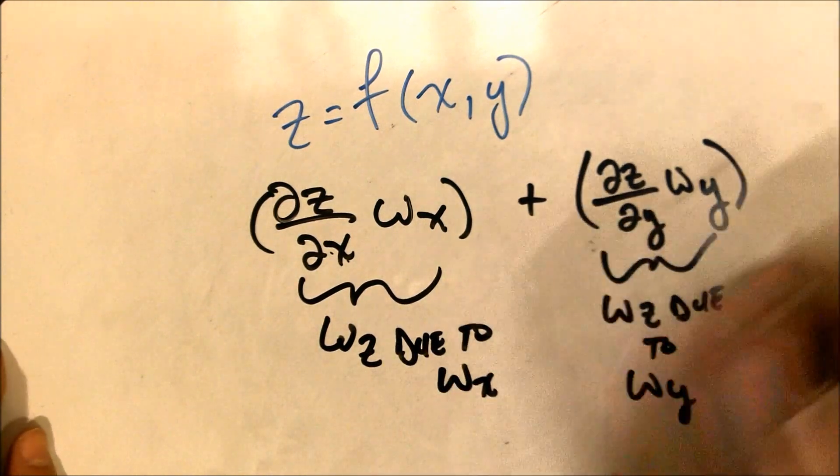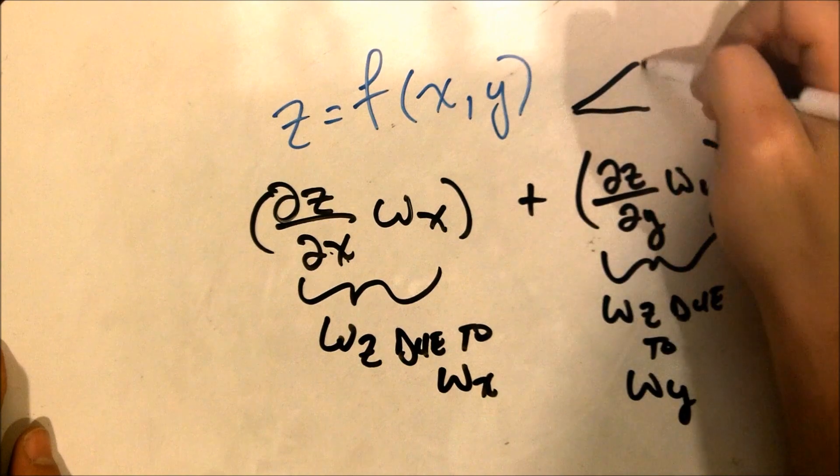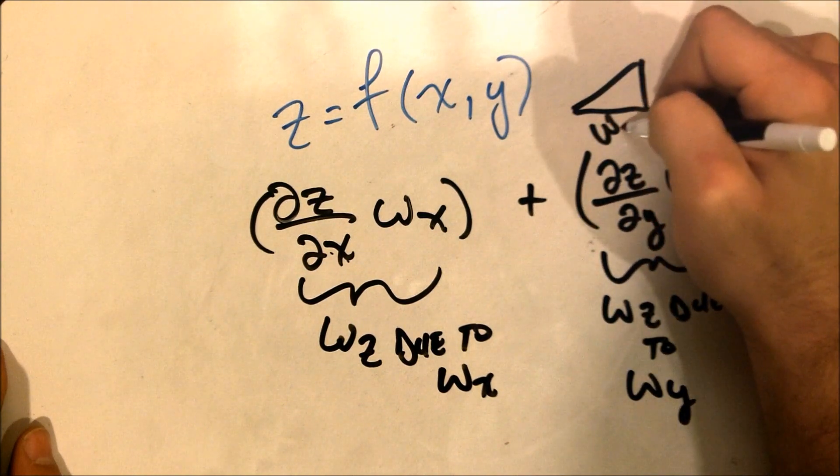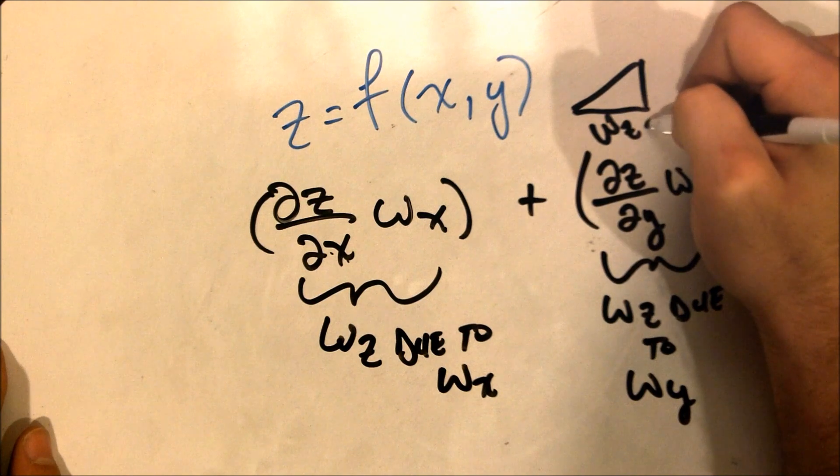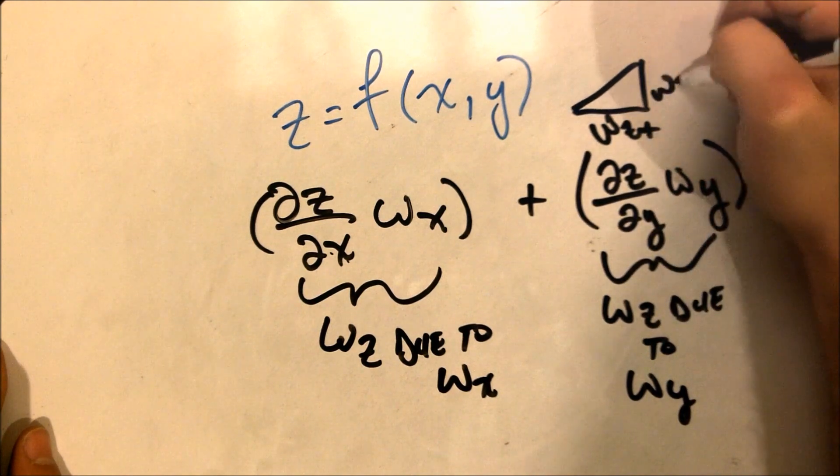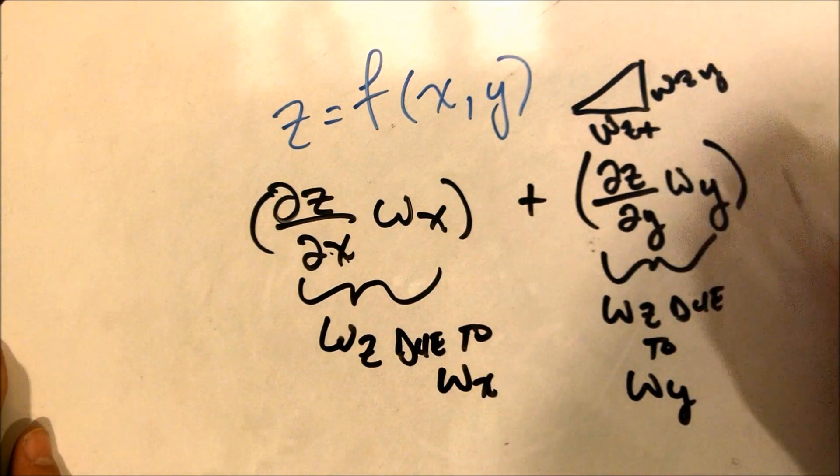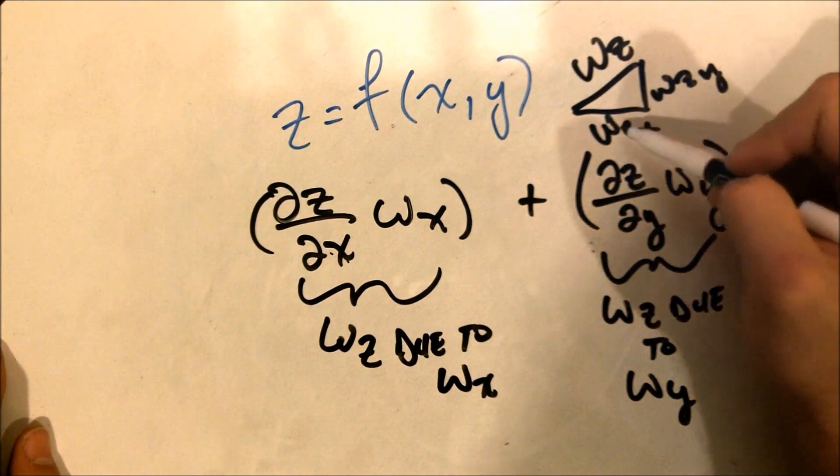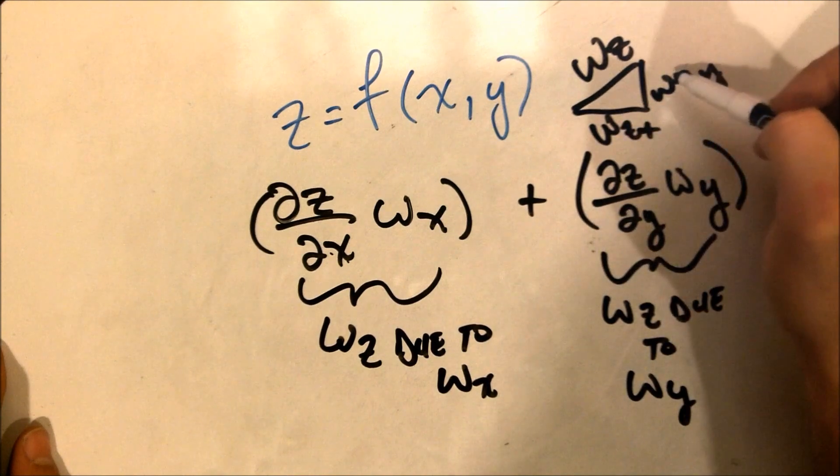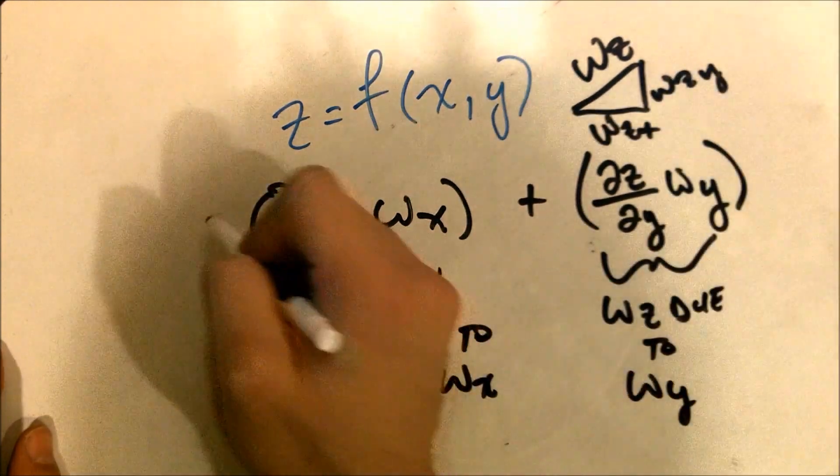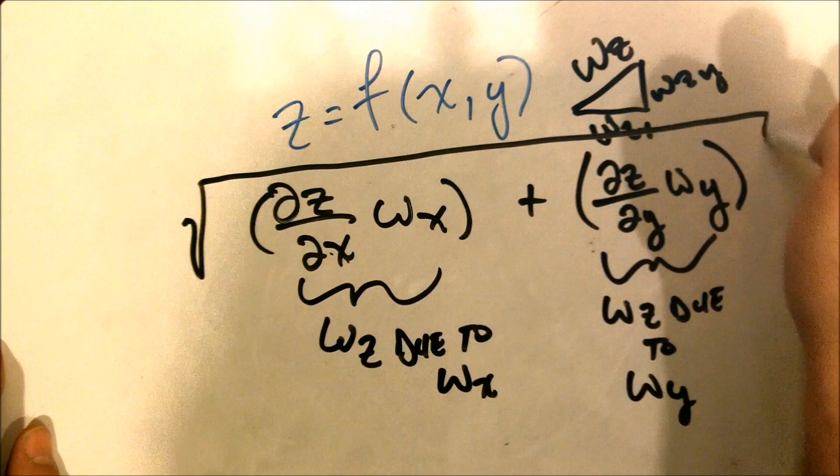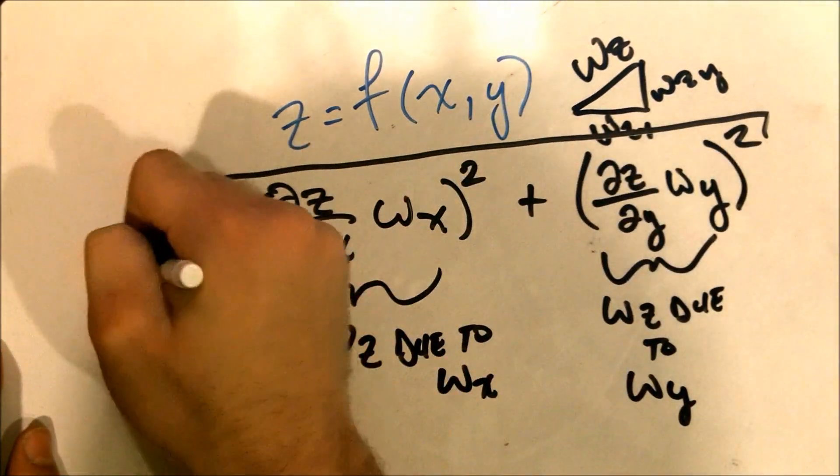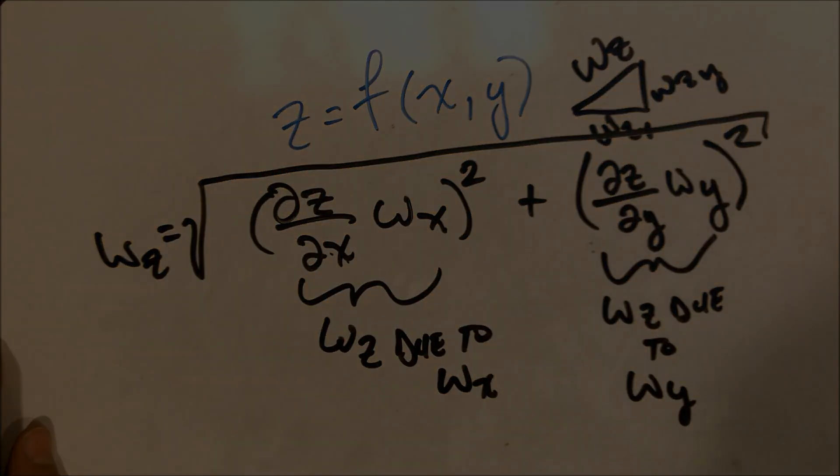Well, we add them like we add the sides of a triangle. And so we would say, if this is omega-Z due to X and this is omega-Z due to Y, then this we'll call omega-Z, or the total omega-Z. Well, it's this squared plus this squared square root. And so if I do that and square these, that's how we find it.